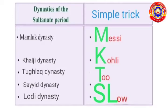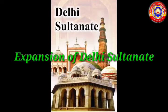Messi: M for Mamluk, second one Kohli — K for Khalji, Too — T for Tughlaq, and Slow — S for Sayyid and L for Lodi. Today we will discuss about the expansion of power of Delhi Sultans to other parts of the Indian subcontinent.